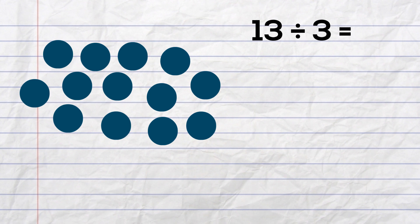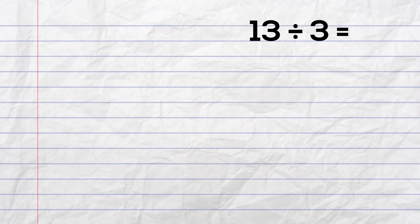Let's look at our next problem, 13 divided by 3. The 13 is our dividend, and we have 13 circles. The divisor is 3, so I will put them in groups of 3. And I am going to create columns again.